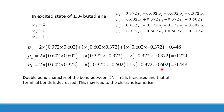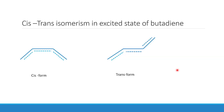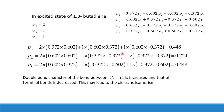From the excited state values — P12 = P34 = 0.448 and P23 = 0.724 — we see the double bond character of C2–C3 has increased while the terminal bonds have decreased. This leads to cis-trans equilibrium in the excited state of butadiene. In contrast to the ground state where terminal bonds had more double bond character, in the excited state the central bond is stronger.